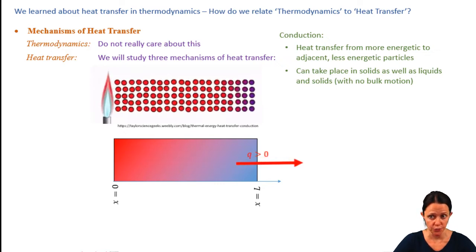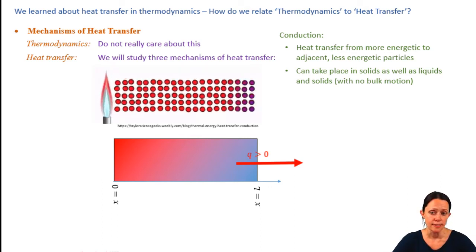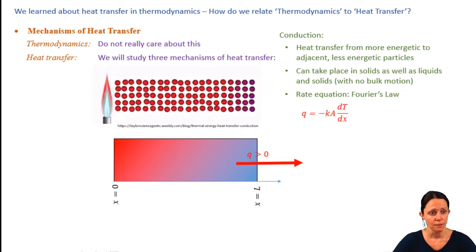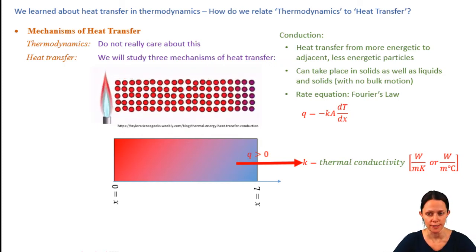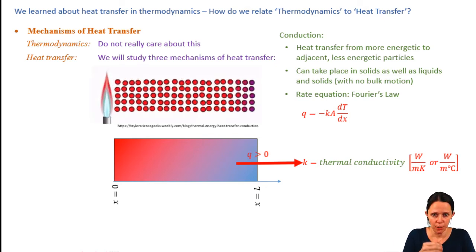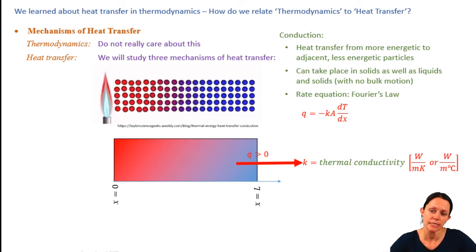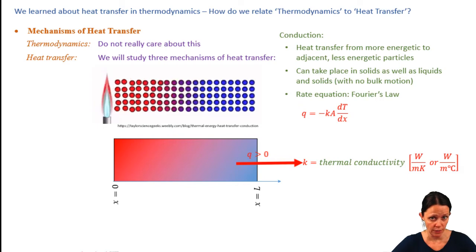Heat transfer in conduction occurs in the direction of decreasing temperature. The rate of heat transfer is given by Fourier's law. Looking at the components: there's a negative sign, and a k term which is the thermal conductivity — a property of the material — with units of watts per meter per degree Celsius or Kelvin. Since a temperature change in Kelvin and degrees Celsius is the same, a thermal conductivity of 10 W/m·K is equivalent to 10 W/m·°C.